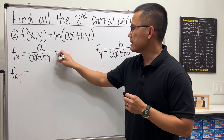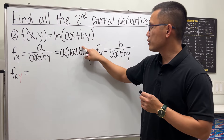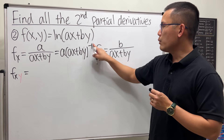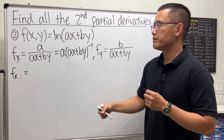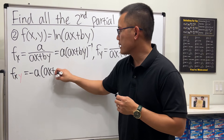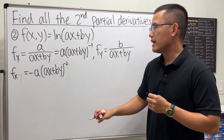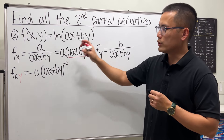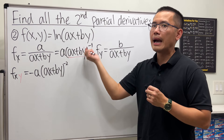For the second derivative fxy, we don't need the quotient rule because a is just a constant. Write fx as a times (ax + by) to the negative one power. Put the power to the front and subtract one from the exponent, giving negative a times (ax + by) to the negative two. Then take the derivative of that with respect to y, multiplying by b.